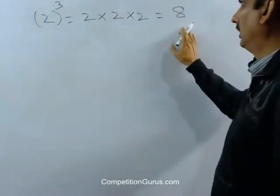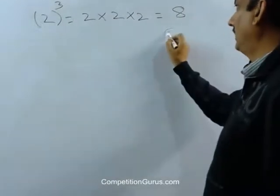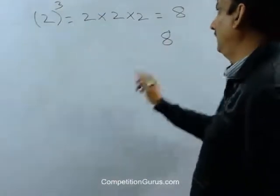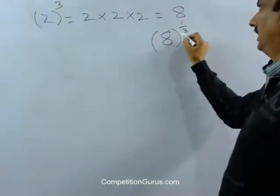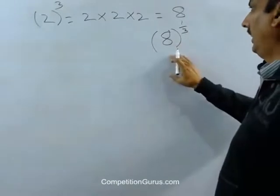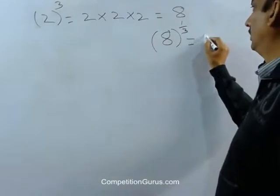And what is cube root? Cube root of 8 is equal to 2. And I can also show why cube is shown by 3, cube root is shown by 1 by 3. So cube root of 8, that is 8 raised to the power 1 by 3, will be equal to 2.